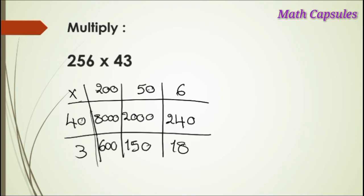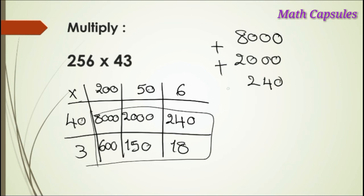Now we are done with the numbers. We're going to add them up to get the final answer. So let us put them here: 8000 plus 2000 plus 240 plus 600 plus 150 plus 18. Now add them up to get the final answer.